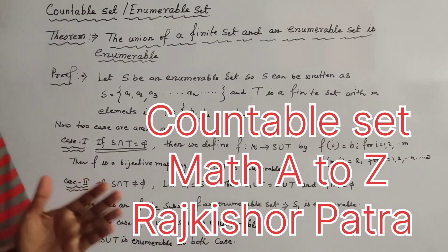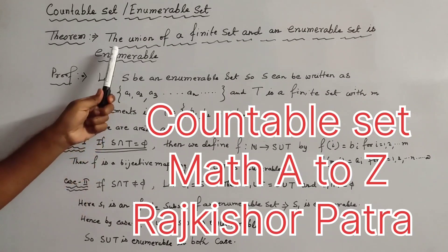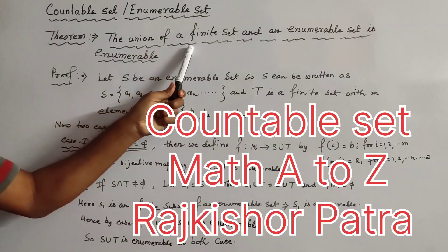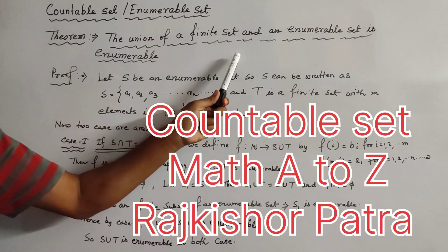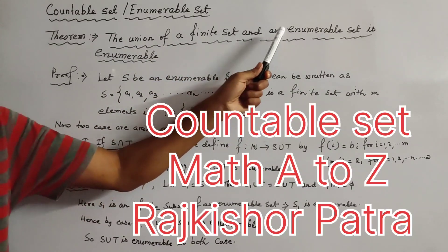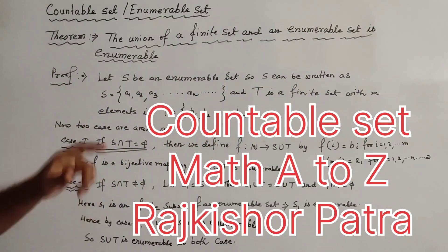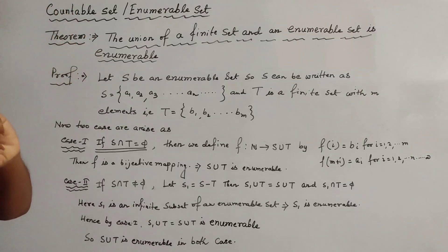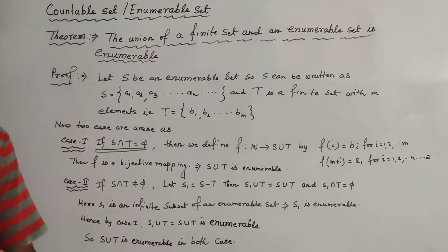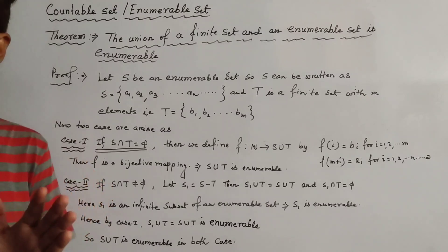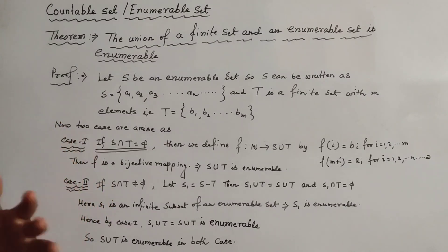The important theorem is: the union of a finite set and an enumerable set is enumerable. This is the statement of the theorem — the union of a finite set and an enumerable set is also enumerable.